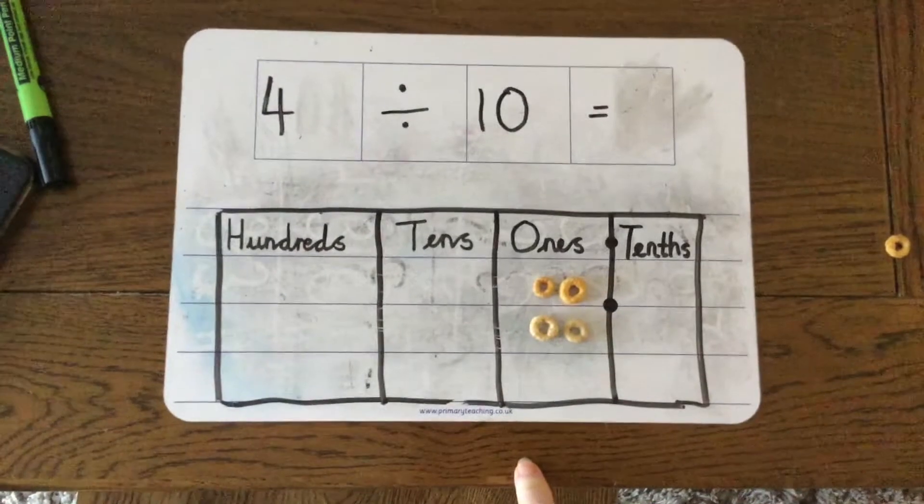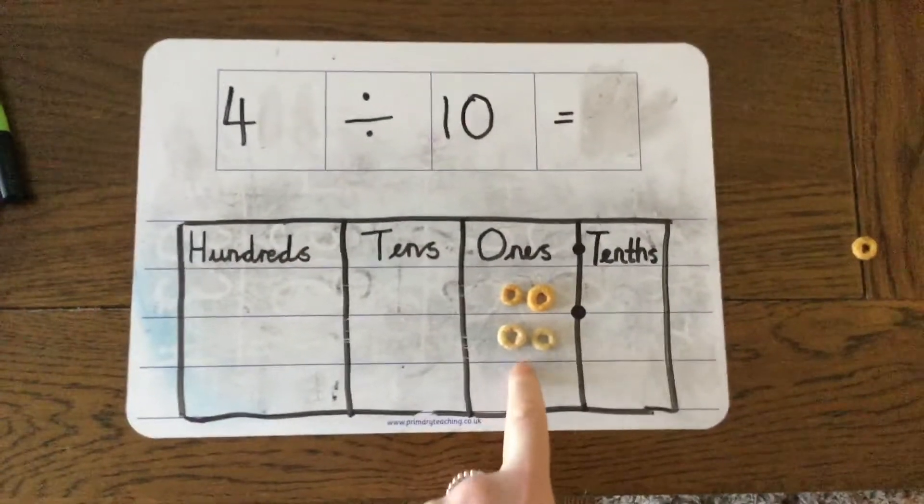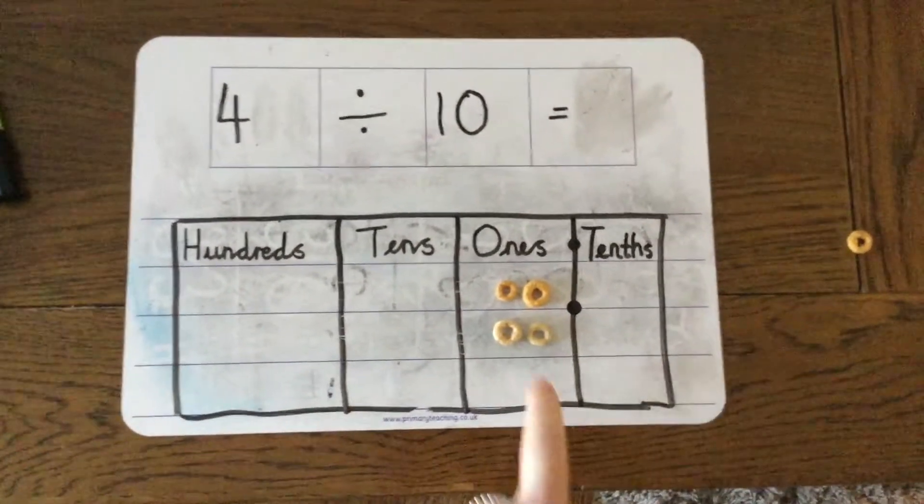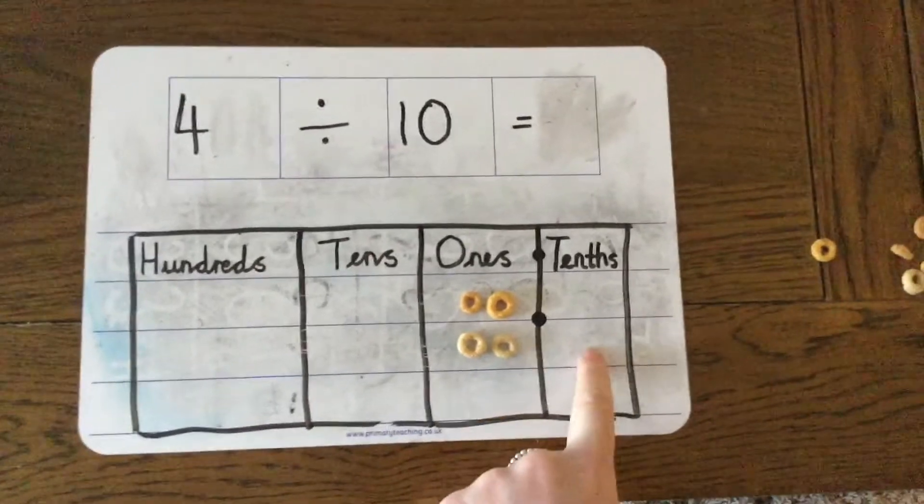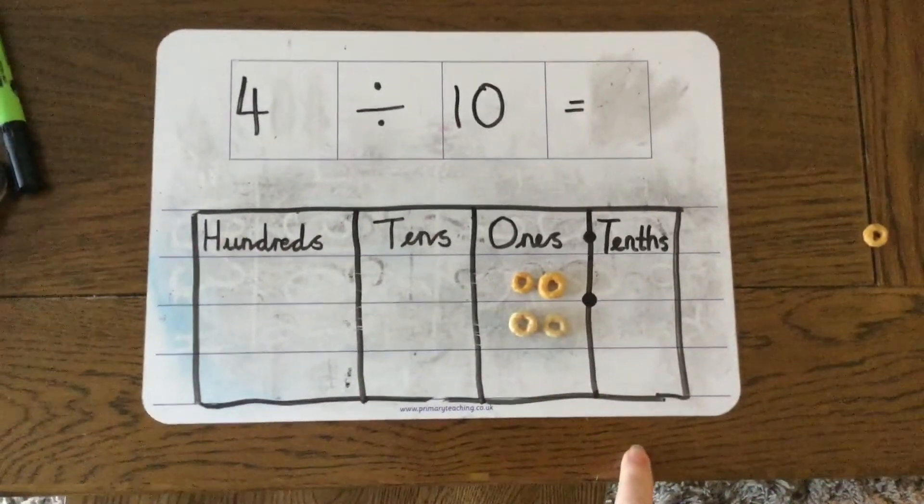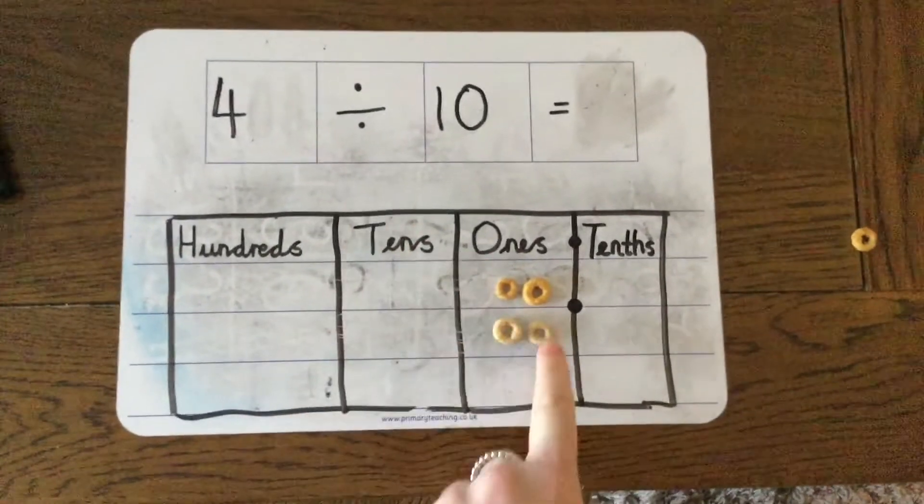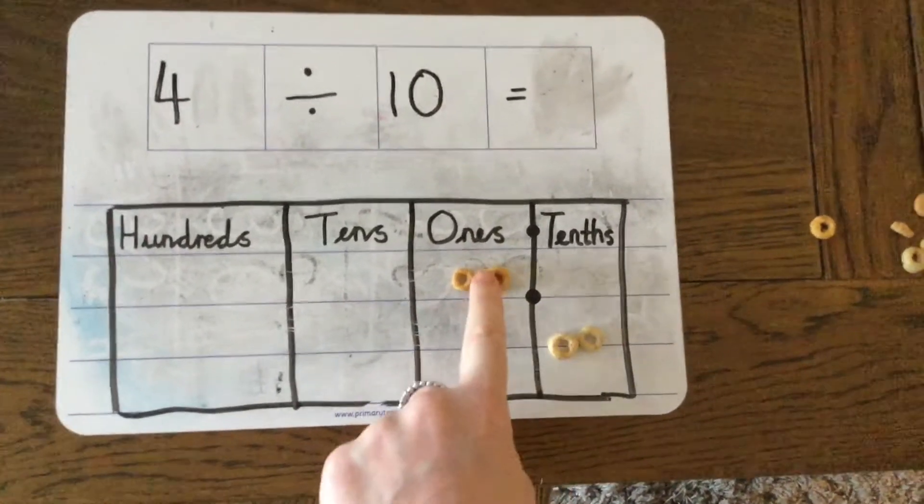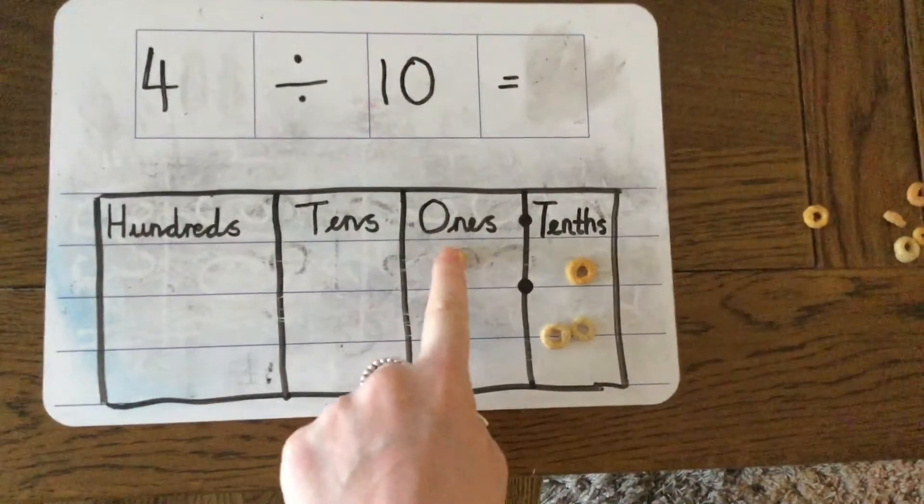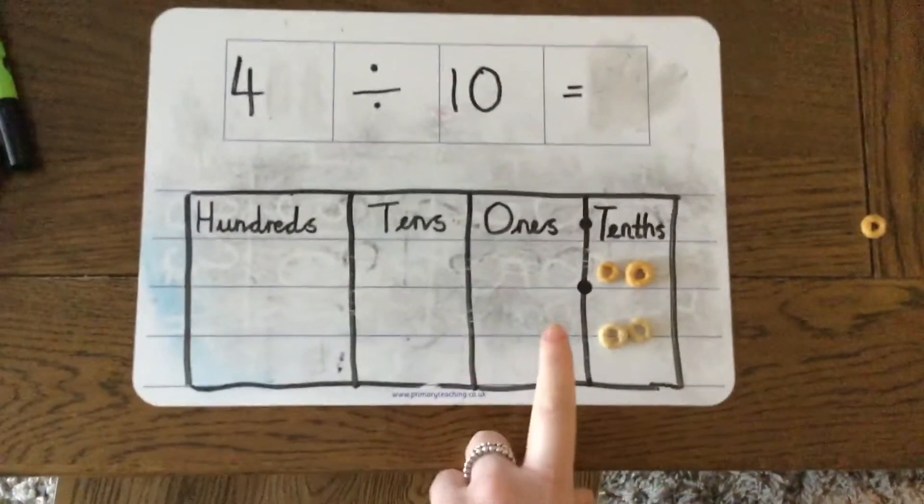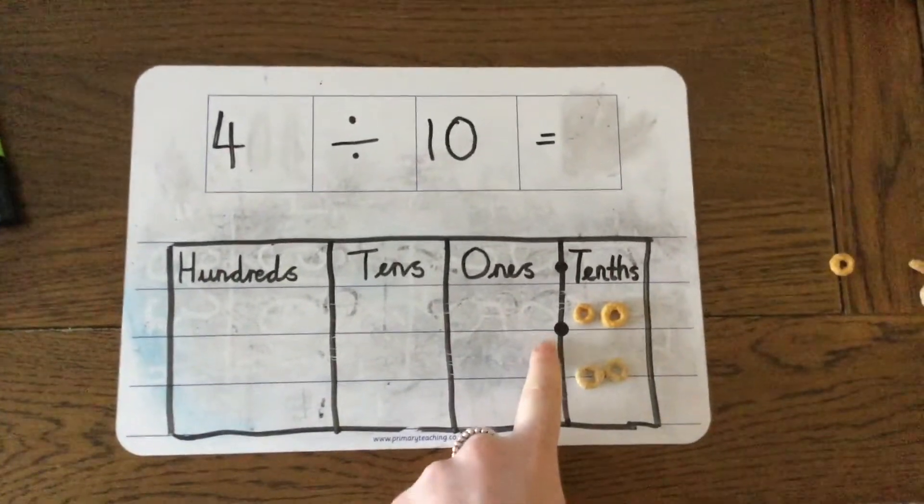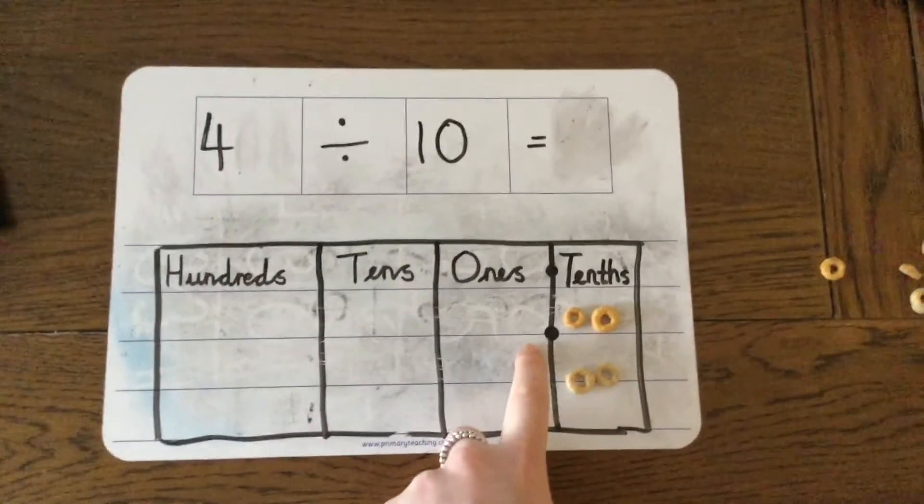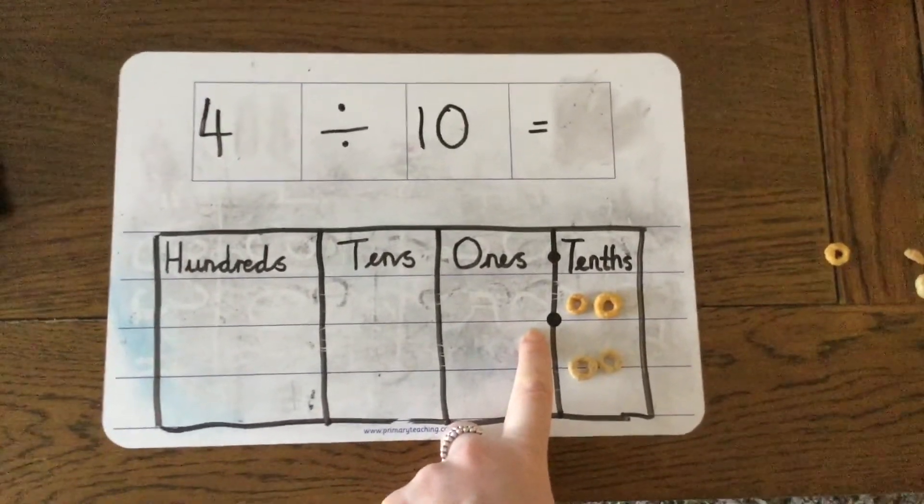Now we're following the same pattern as before. When we're dividing by 10, the place value of our digits are changing, and it's moving one column to the right. So the place value is changing from 4 ones to 4 tenths. It's really important to remember that the decimal point does not move. It is fixed.